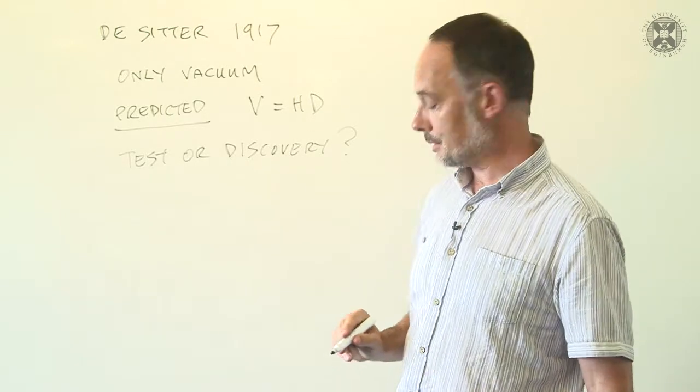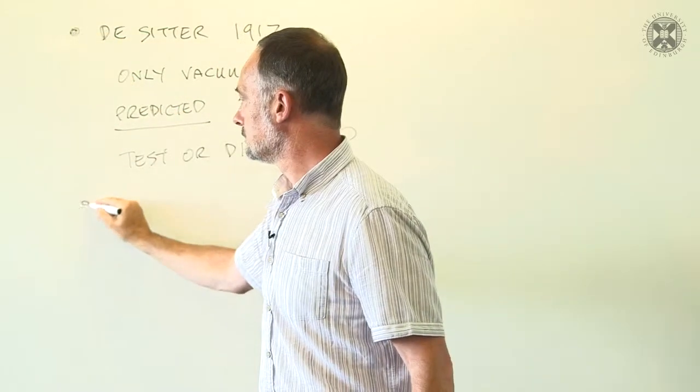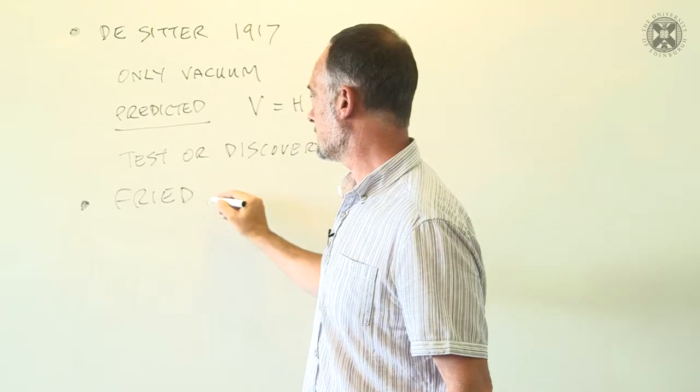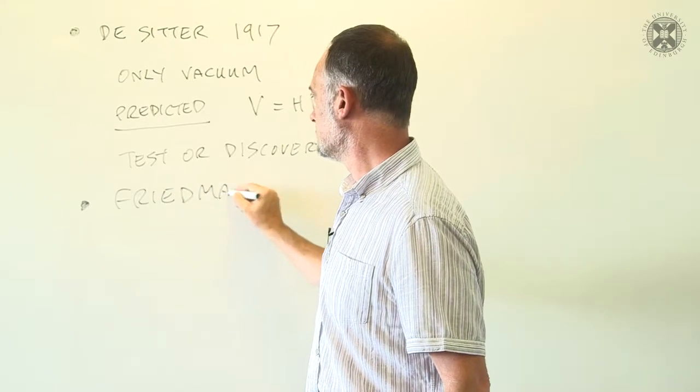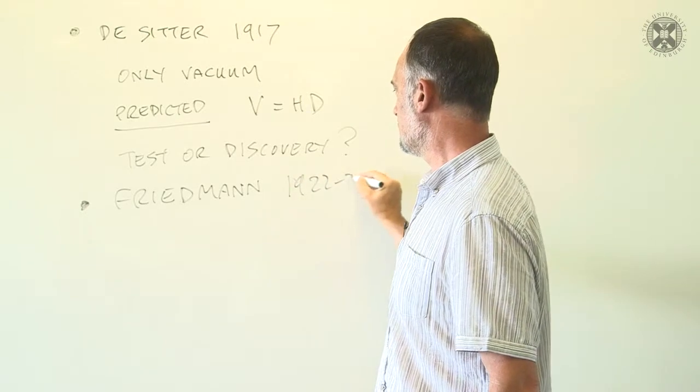But of course, the most general universe contains more than just vacuum. And this was solved by the Soviet physicist Friedman in 1922 to 1924.